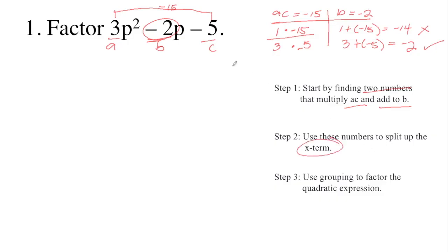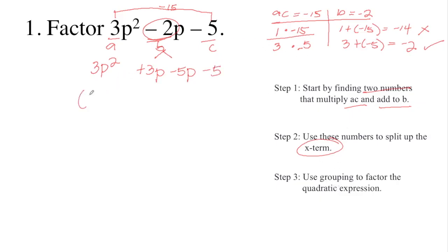Then let's use those numbers to split the X term. Copy the first term, 3P squared, and split negative 2P using plus 3P and minus 5P. Copy the last term, which is negative 5. Step 3: use grouping to factor the quadratic expression — group the first and second terms together, and the third and fourth terms as well.